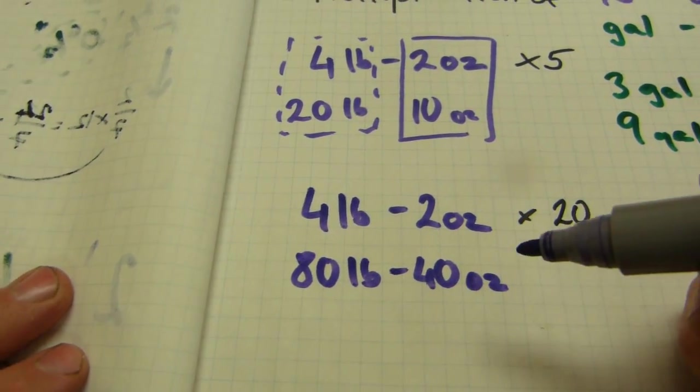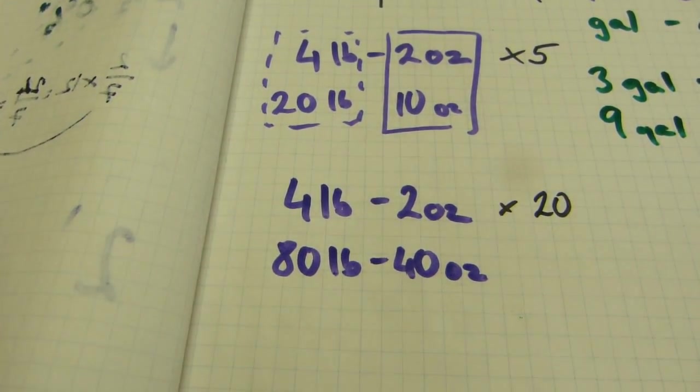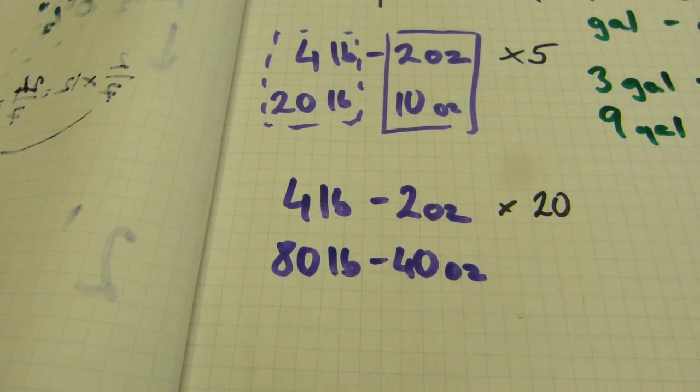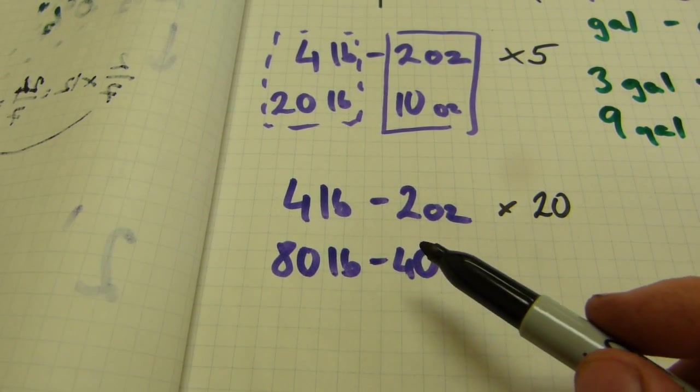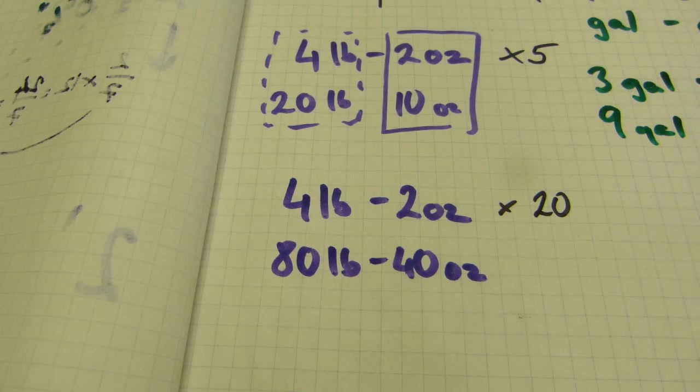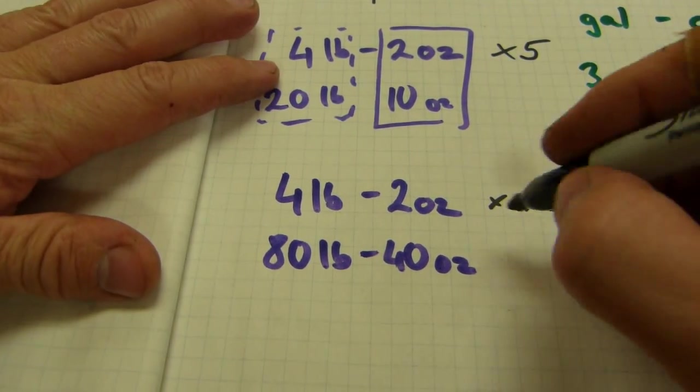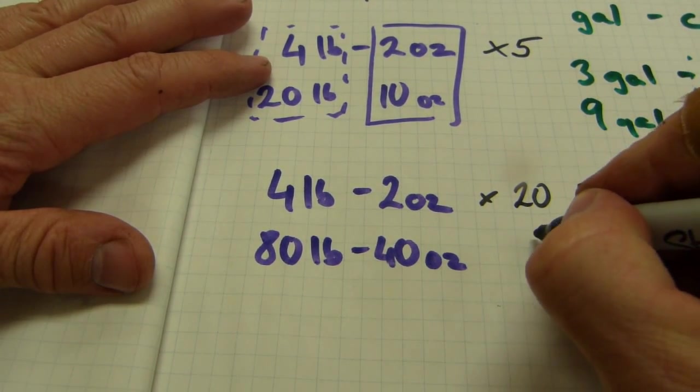Now, in the ounces column, the maximum number you can have is fifteen. Because if you do have sixteen ounces, sixteen ounces make a pound, you carry them over to the pounds column.